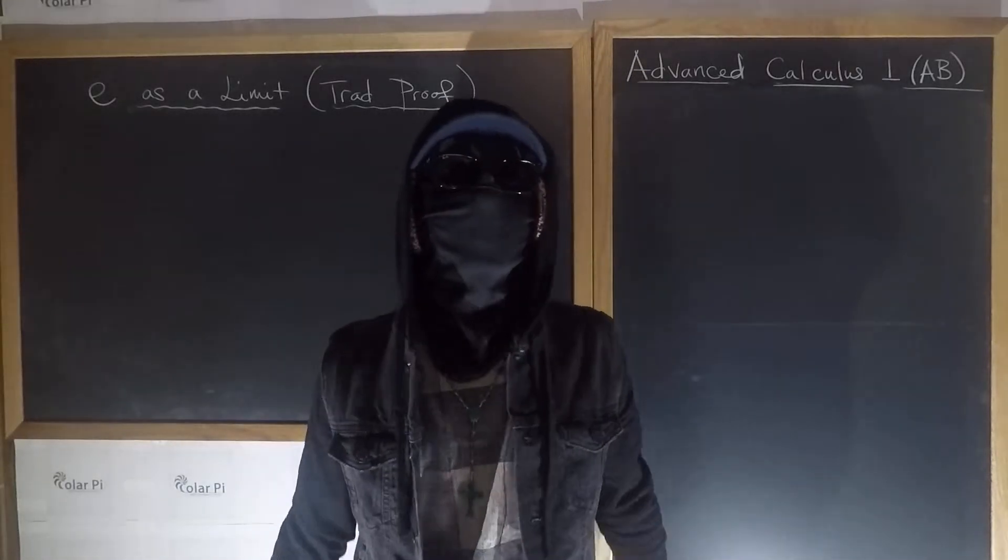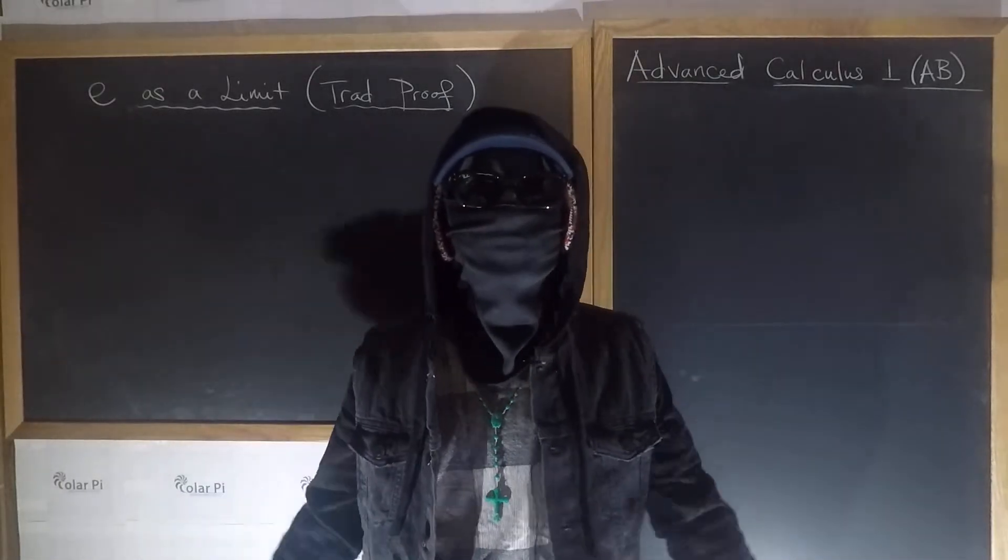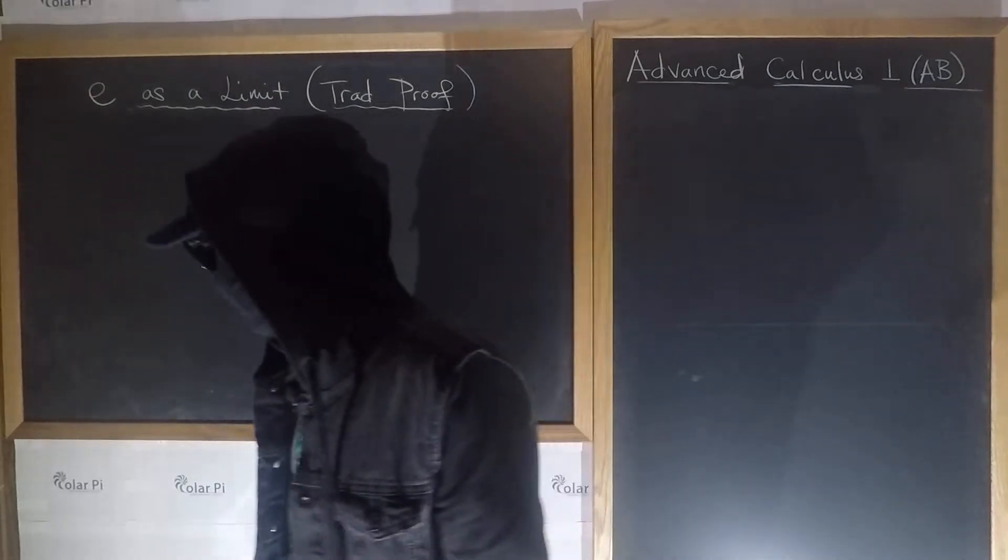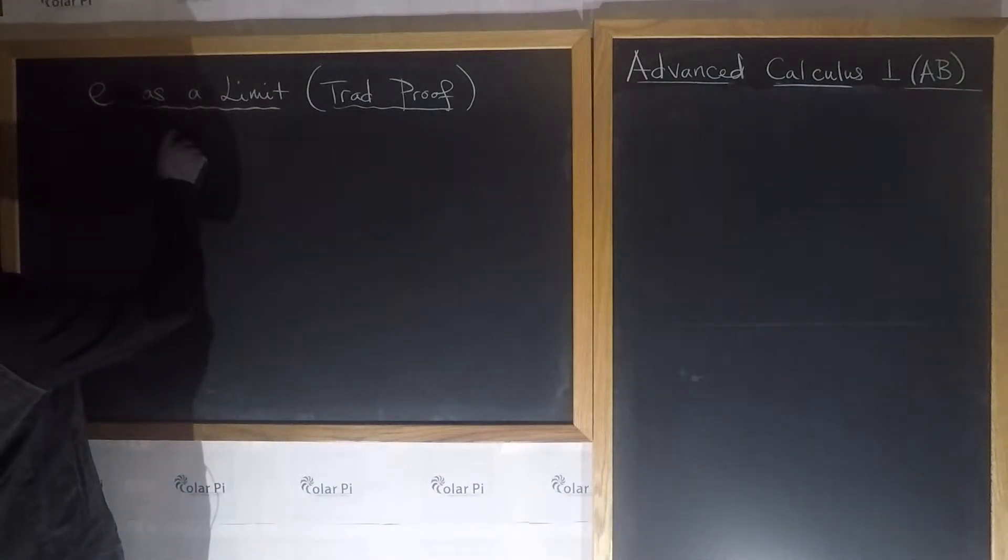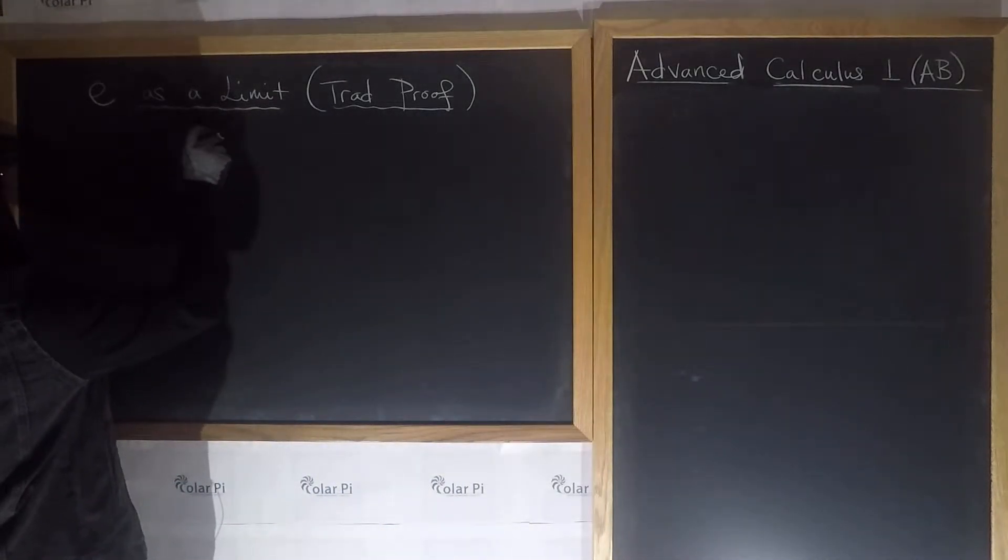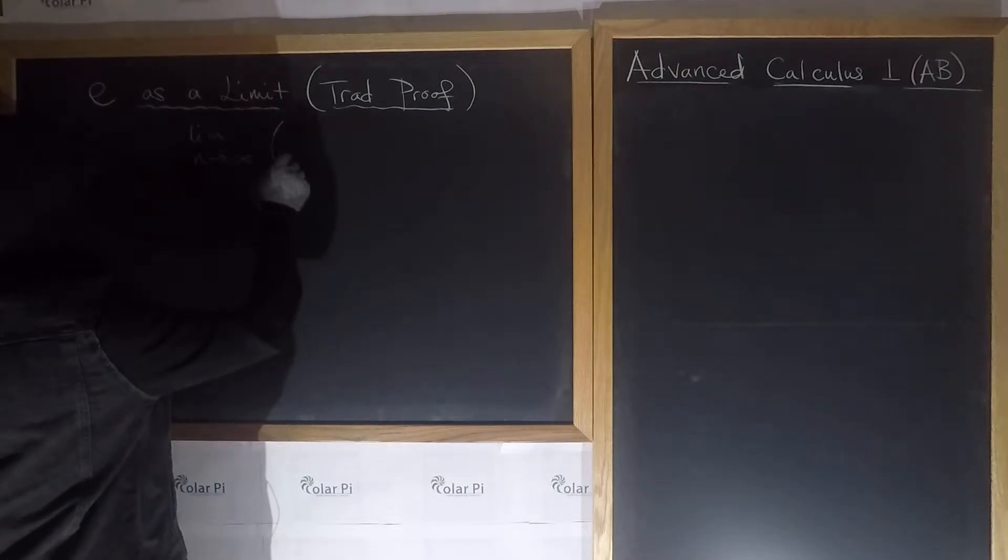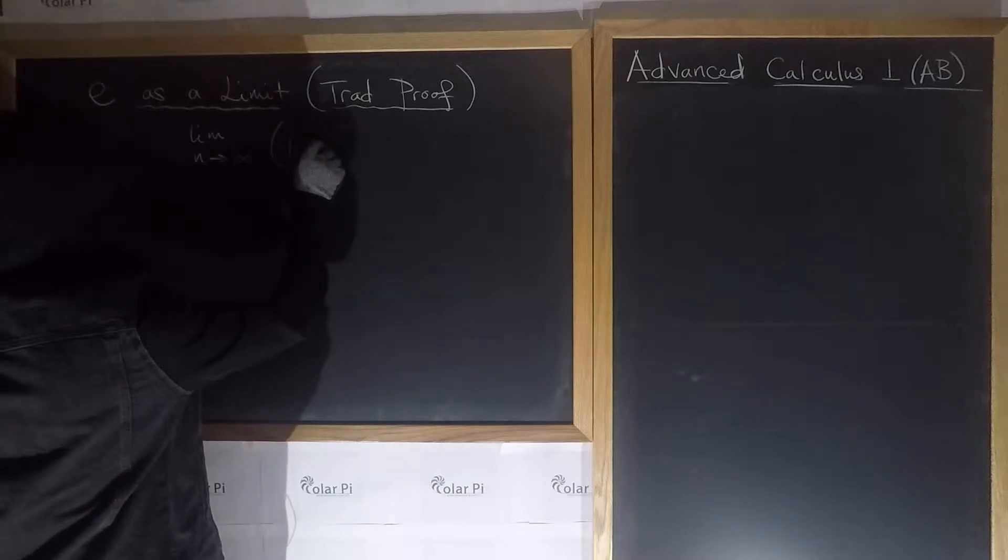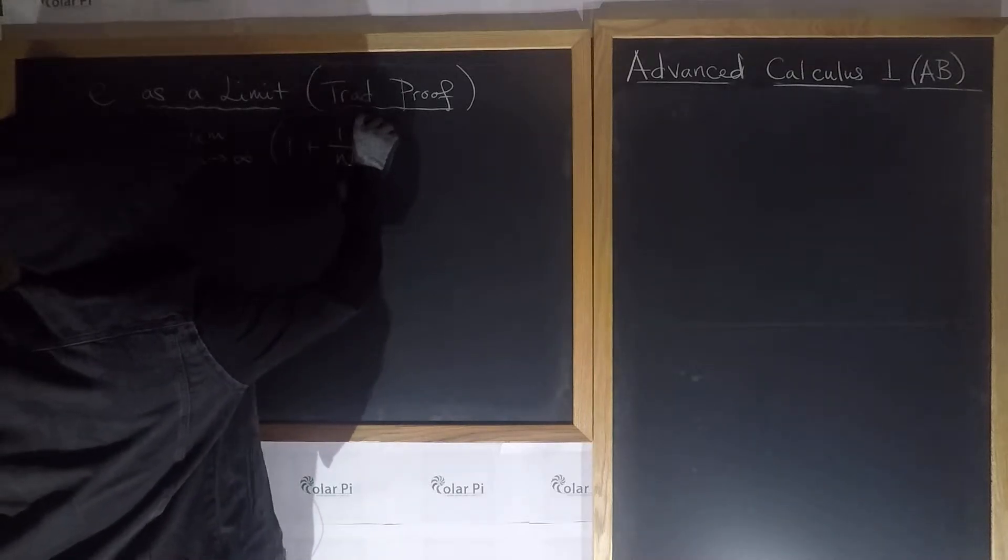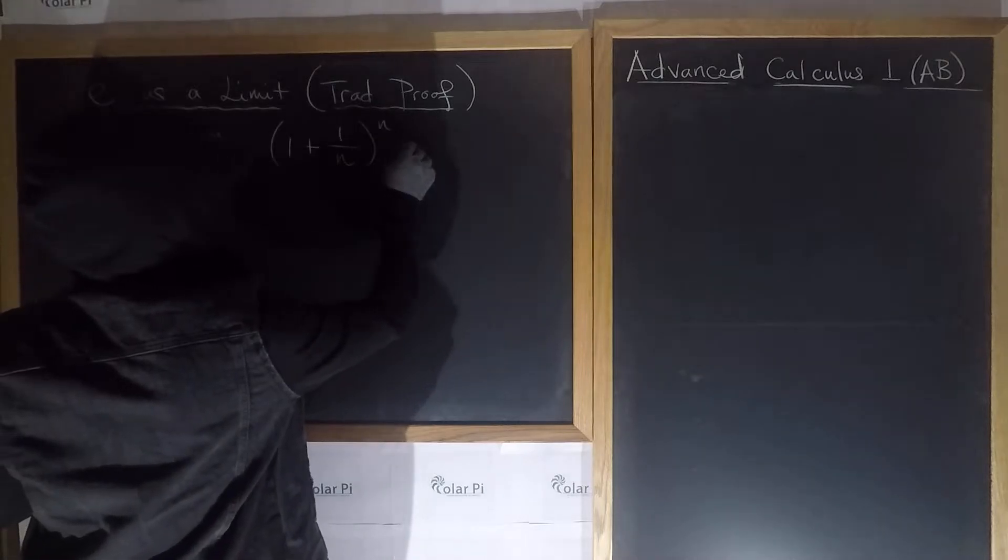Hey guys, welcome. So in this video, I'm going to offer you the traditional proof of e as a limit, which is showing that this is true: lim as n goes to infinity of (1 + 1/n)^n is equal to e.